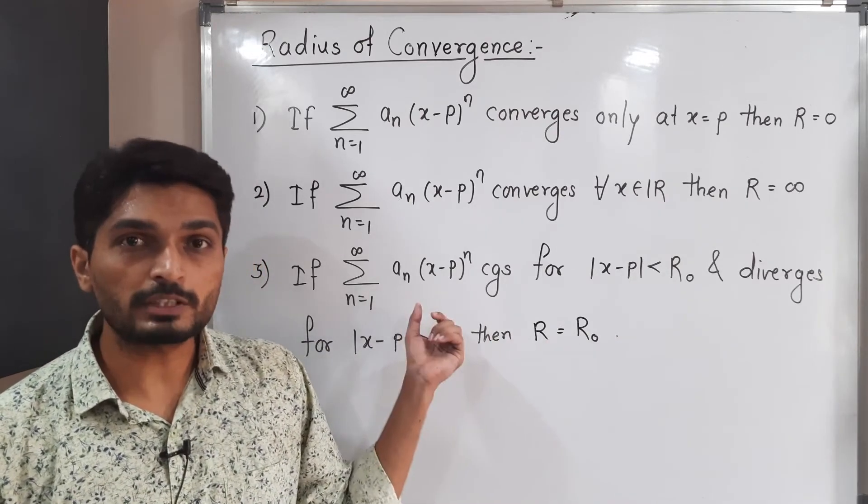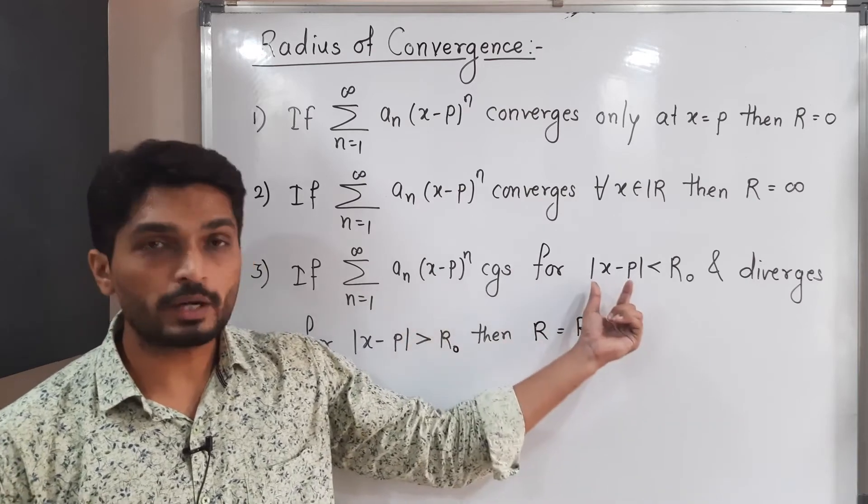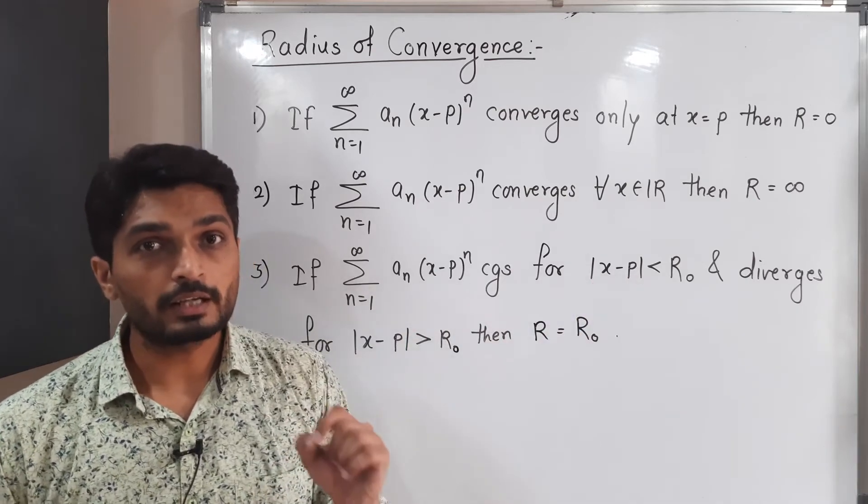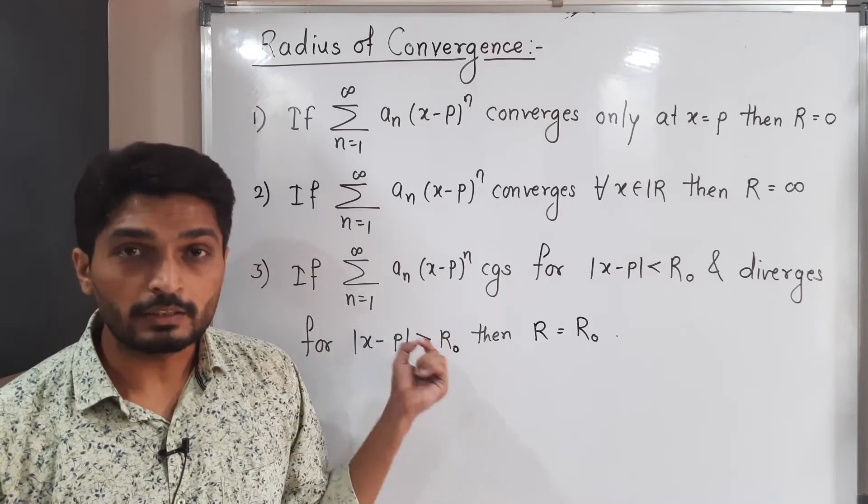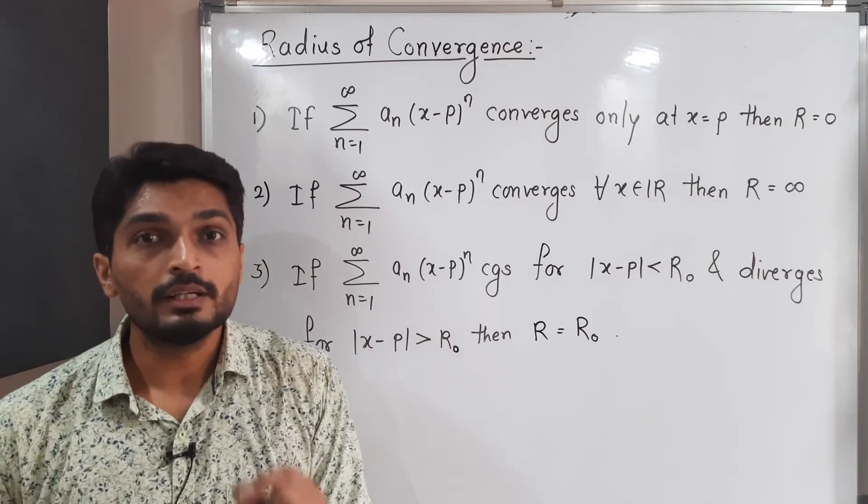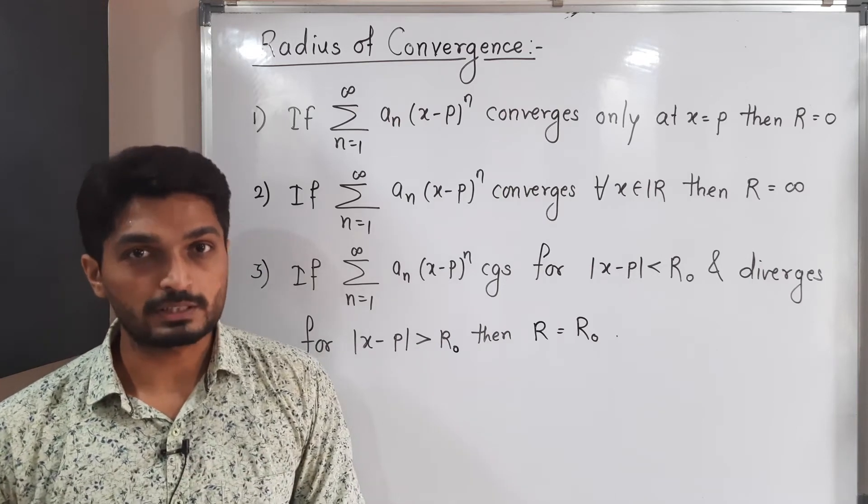That means this power series convergent for |x-p| < R_0 and it is divergent for |x-p| > R_0. Then in this case we say R_0 is a radius of convergence of this power series.